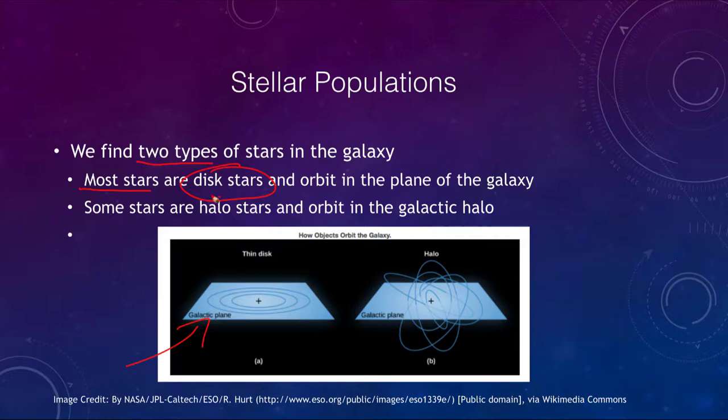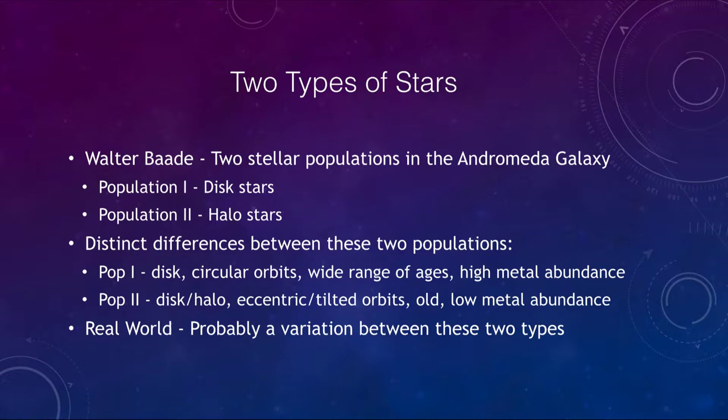However, there are also halo stars that orbit in the galactic halo. Instead of following the galactic plane as other stars do, these go in all sorts of directions and at all sorts of eccentricities — sometimes very eccentric, very squashed orbits — quite different from the stars in the galactic plane, and we're going to see that this can tell us something about the early history of our galaxy.